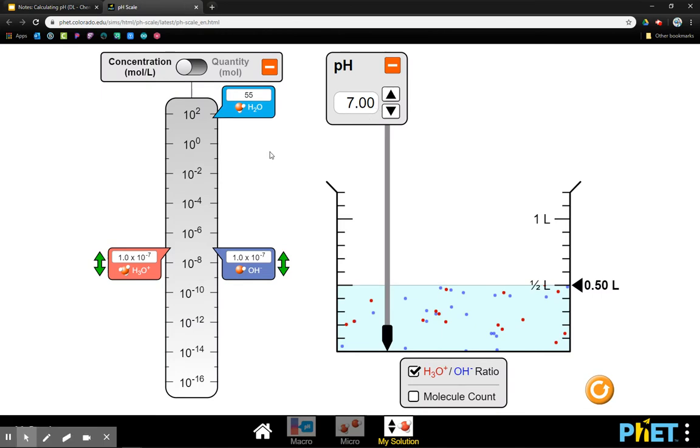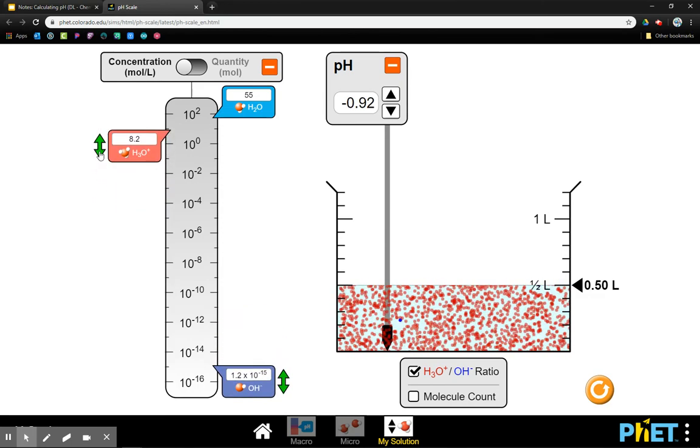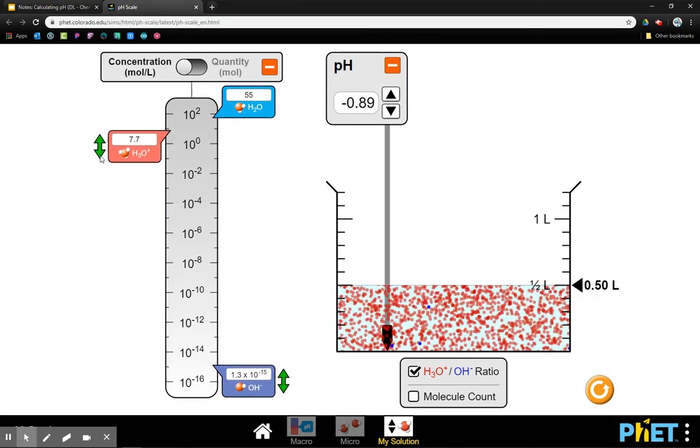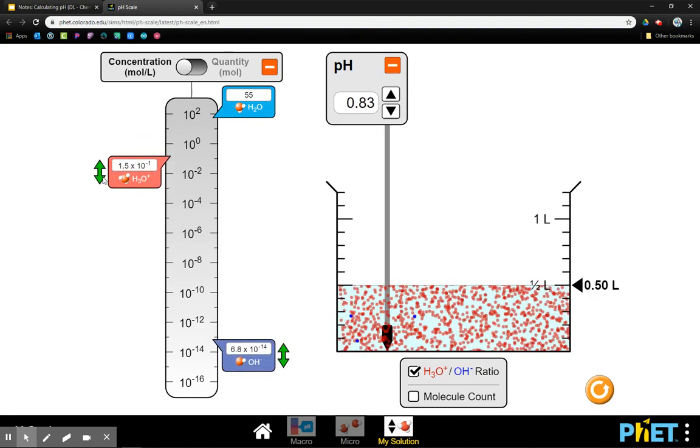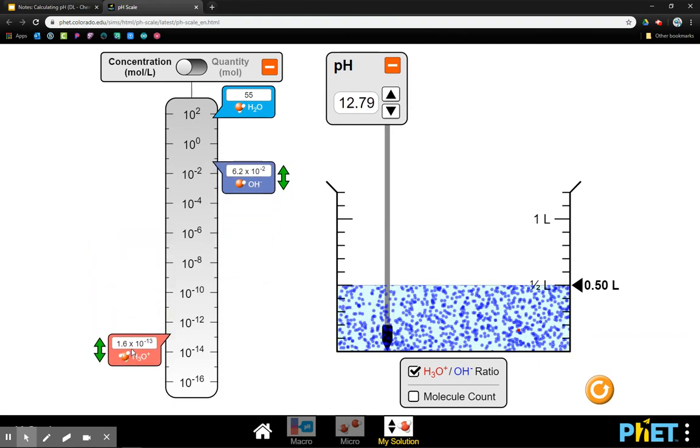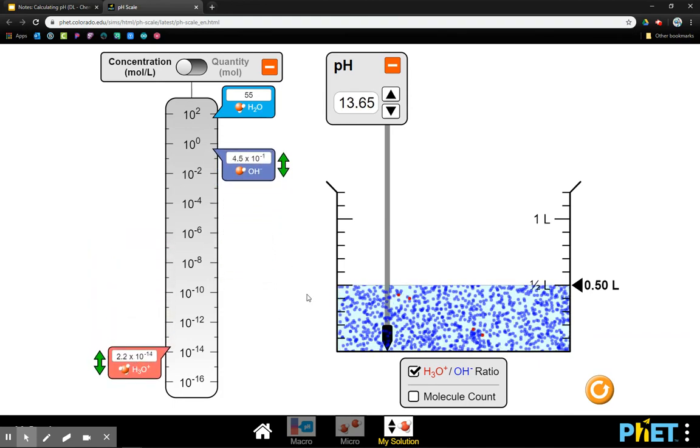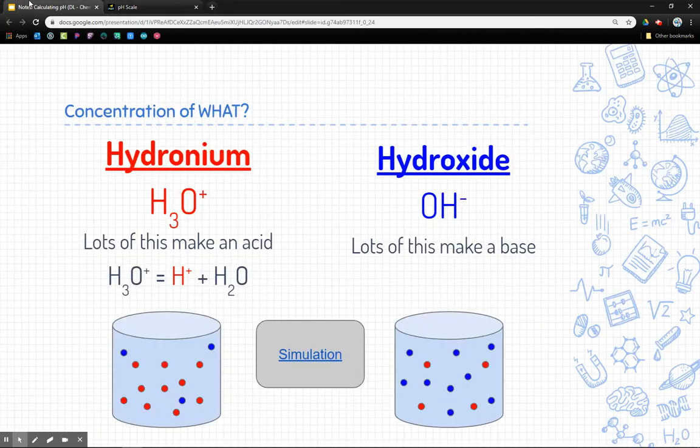And so we saw the simulation before, but I just want to show you that again. If I increase the amount of hydronium, the pH goes down, it becomes negative pH, or becomes a lower than 7 pH, and it's acidic. If I decrease that concentration, then the hydroxide concentration increases, and it becomes more basic. And so this is kind of an important concept when we talk about pH.